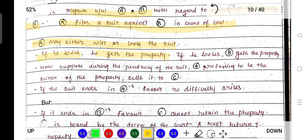If A wins, A will get the property. If A loses, B gets the property. Now suppose during the pendency of the suit, A, professing to be the owner of the property, sells it to C.